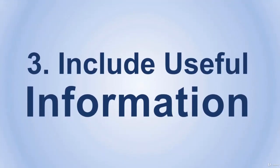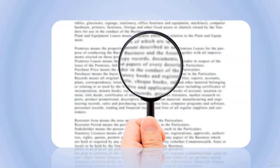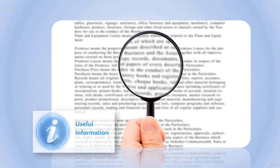Number three: include useful information. You should include all the useful information a visitor could need. No matter what kind of business you are running, your audience will definitely need to know a lot of things — your business, your products, your services. SEO helps you with that. Make sure to include every single piece of info your visitor might possibly need. Put yourself in their shoes and think about what you would need to know — that will help you figure out the content you should be including.